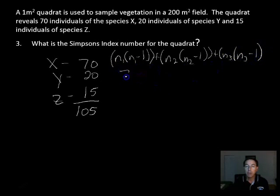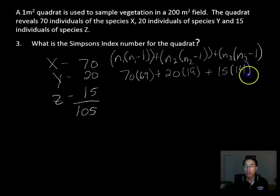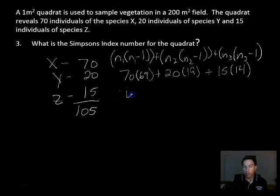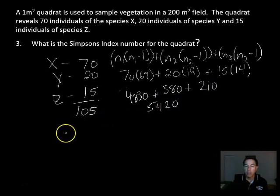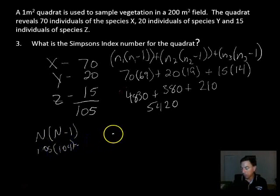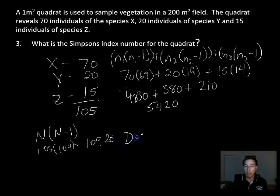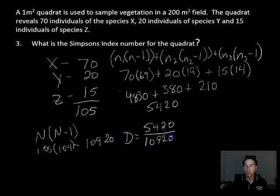So that gives us 70 times 69 plus 20 times 19 plus 15 times 14. When we multiply these out, we get 4830 plus 380 plus 210. That gives us 5420. So then we want to find big N times big N minus 1. That's 105 times 104, which equals 10920. So then we find our species index, which is D equals this 5420 that we got from up here, divided by this one here, which is 10920. And what that gives us is 0.496.